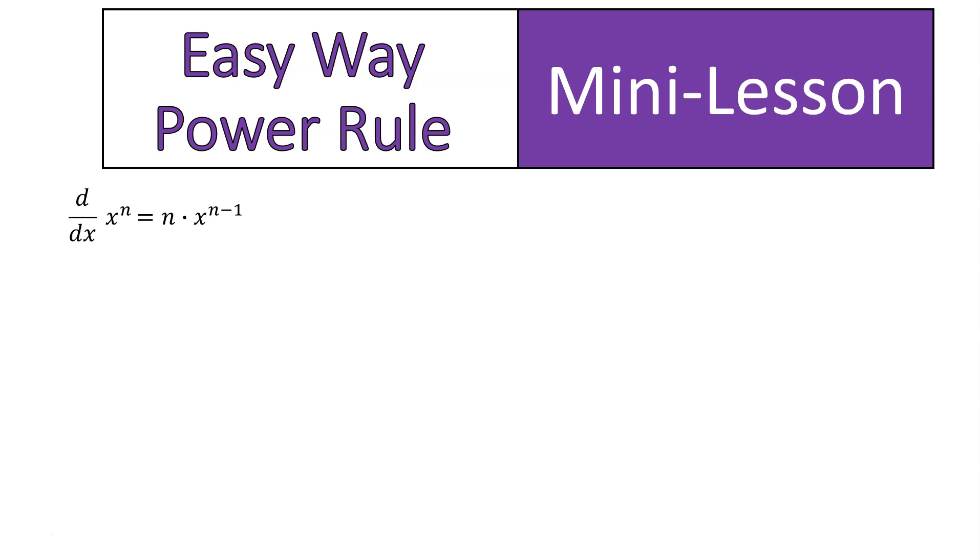This is the power rule for derivatives. That d over dx just means you're finding the derivative of a term x to the power of n. So let's look at our function that we just did, 2x squared minus 6. We're going to find the derivative of each of those terms and put them all together for our final answer.